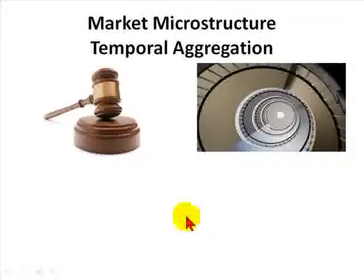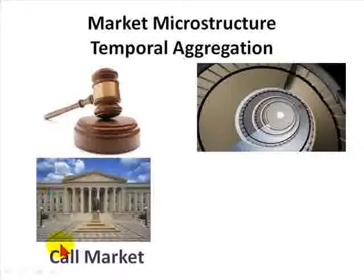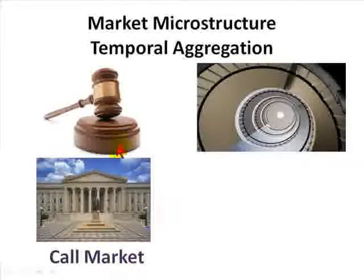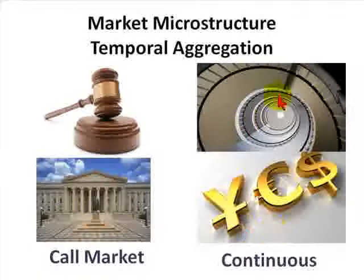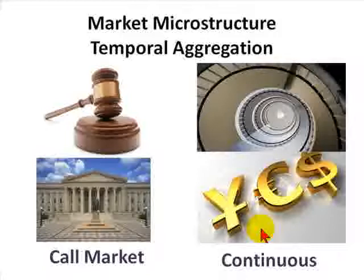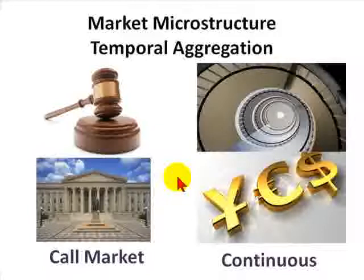Temporal aggregation refers to the timing of trade decisions. At one end of the spectrum, we have the call market, where trading occurs synchronously at pre-established times. A classic example is the auction of U.S. Treasury securities. At the other end of the spectrum, we have continuous markets, where trading is asynchronous during long intervals of time, with foreign exchange being the classic example. Futures and securities listed on organized exchanges fall somewhere in between.